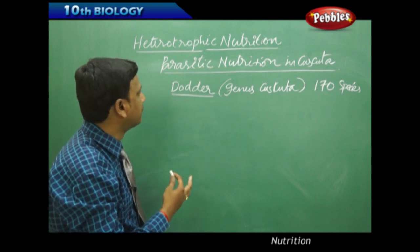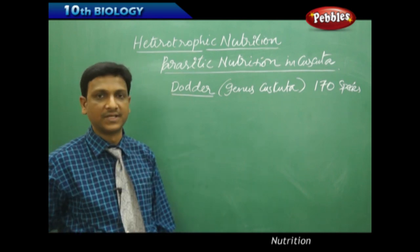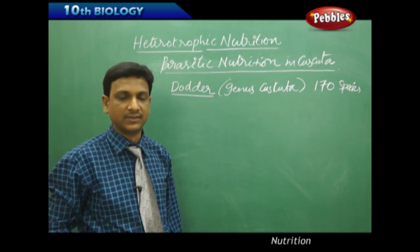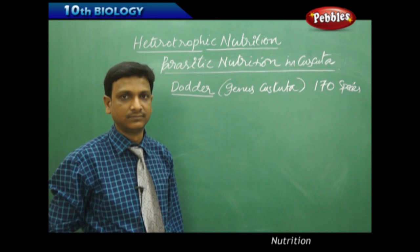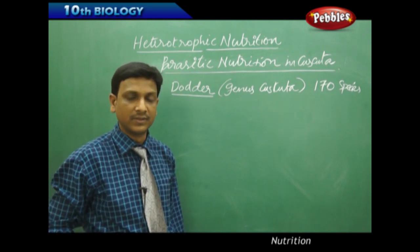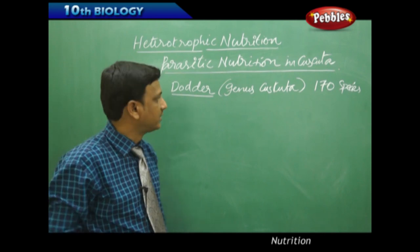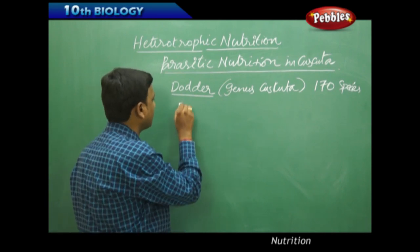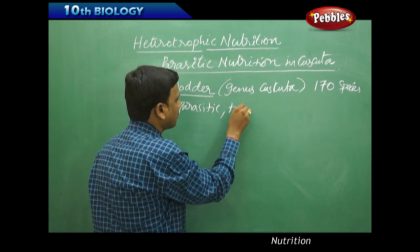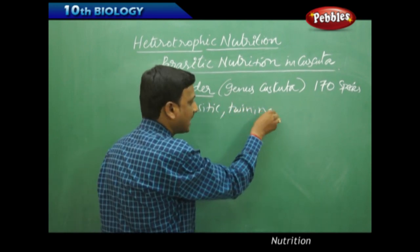We are going to see what kind of nutrition is found in this dodder plant. Dodder is a leafless plant. It is parasitic because it cannot prepare its own food as there are no leaves. Dodder is a parasitic twining plant - it twines around the host.